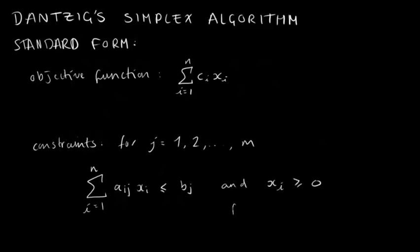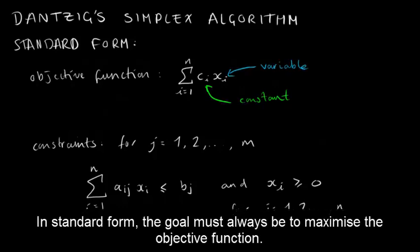Now these may seem overly mathematical and complicated, but they're actually saying something fairly simple. The objective function has n variables, and they're denoted with a subscript value from 1 to n.